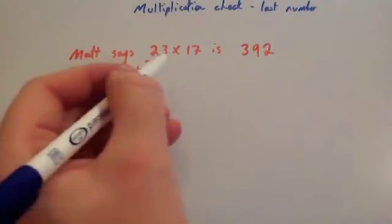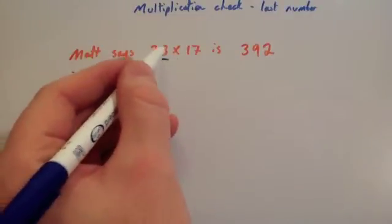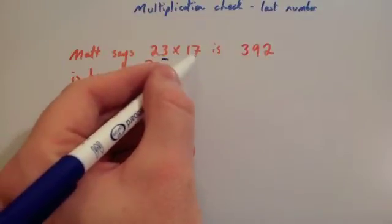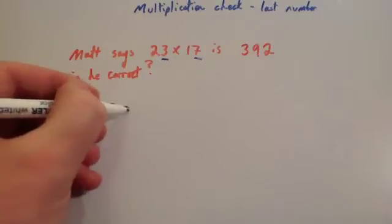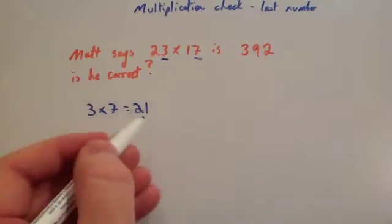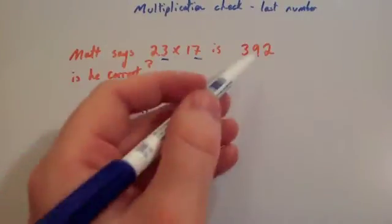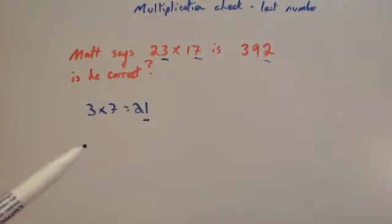The reason is if you look at the last two digits of the multiplication, you've got 23, so let's look at the 3, and 17, let's look at the 7. 3 times 7 equals 21. Because this ends in a 1 and not a 2 as his answer does, I know that he must be incorrect.